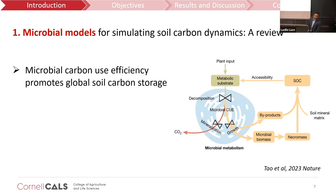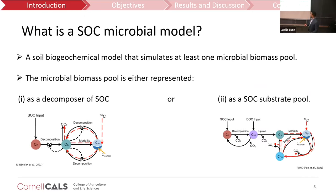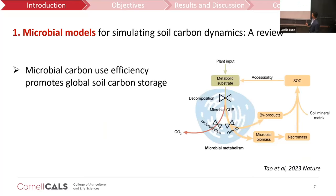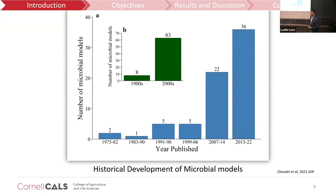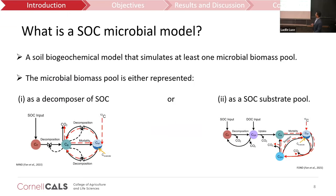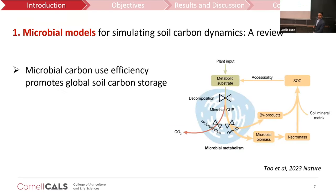I reviewed 71 microbial models because, as shown in recent published papers, the number of microbial models being developed has increased rapidly — very high development of microbial models in recent past years. I reviewed 71 microbial models to compare why there are 71 different microbial models and what the differences are between them.